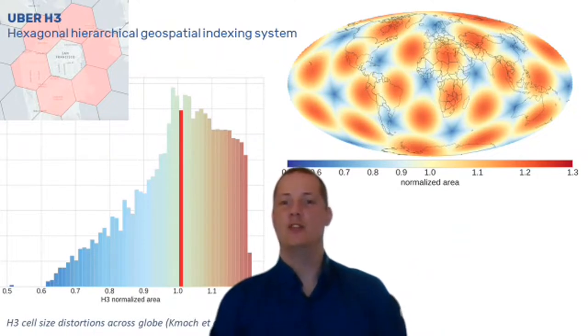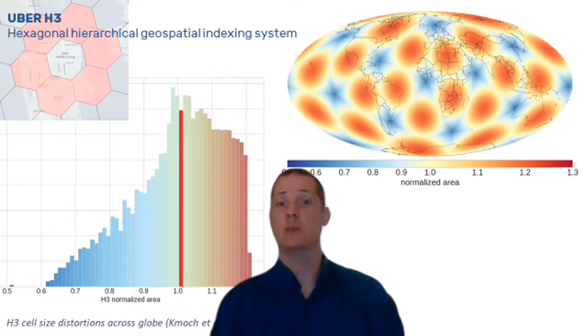You might have heard of the Uber H3 Hexagonal Hierarchical Spatial Indexing System. It is a good DGGS for Uber's city-level use case. Support is already widely available due to its easy usability and stable cross-platform software.